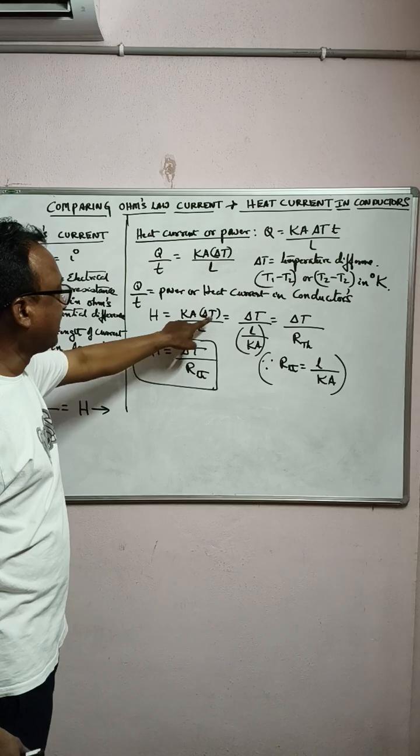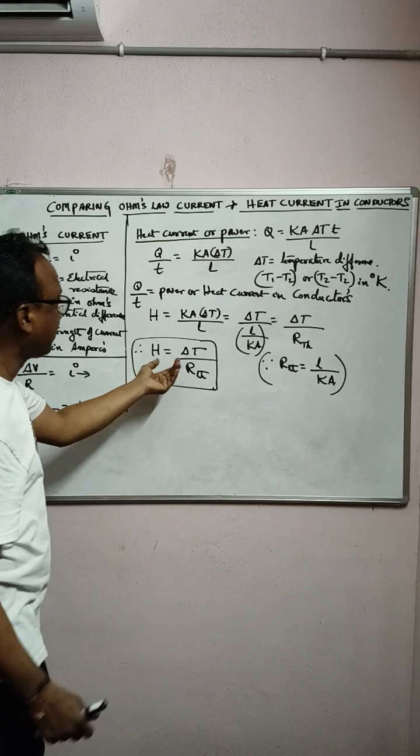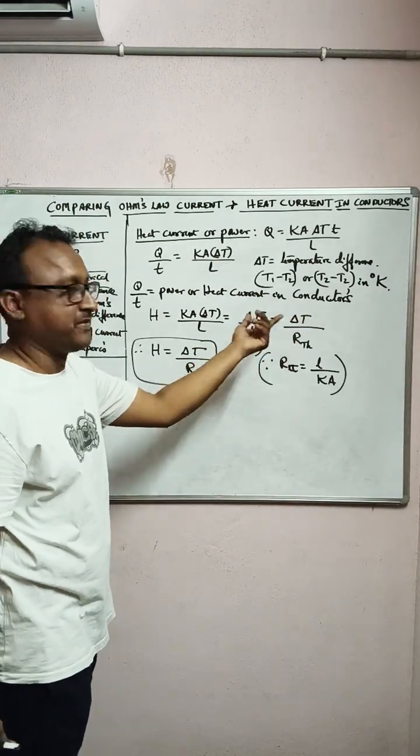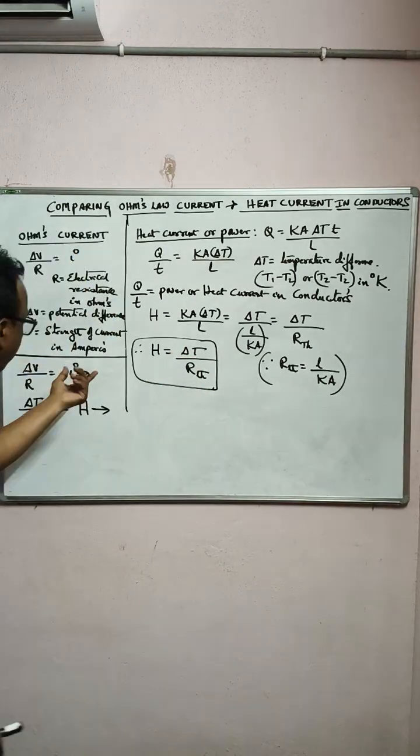So all these equations you are familiar. The difference between the heat current - heat current means temperature difference T1 minus T2 or T2 minus T, that is delta T by R thermal, thermal resistance. Whereas in Ohm's law current, it is delta V by R, potential difference by electrical resistance is electrical current.